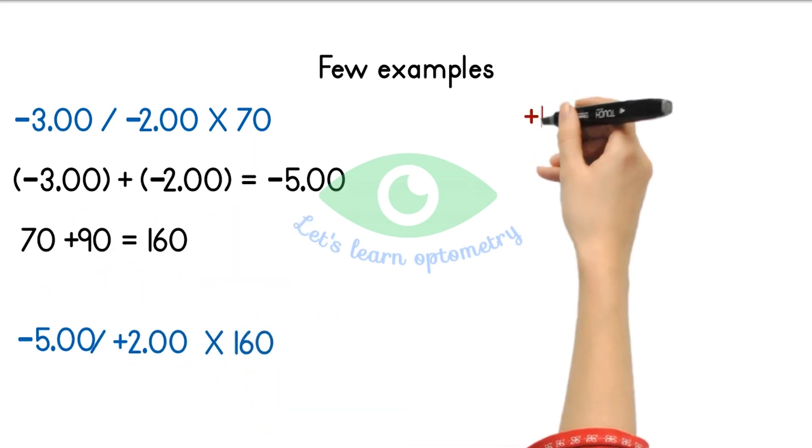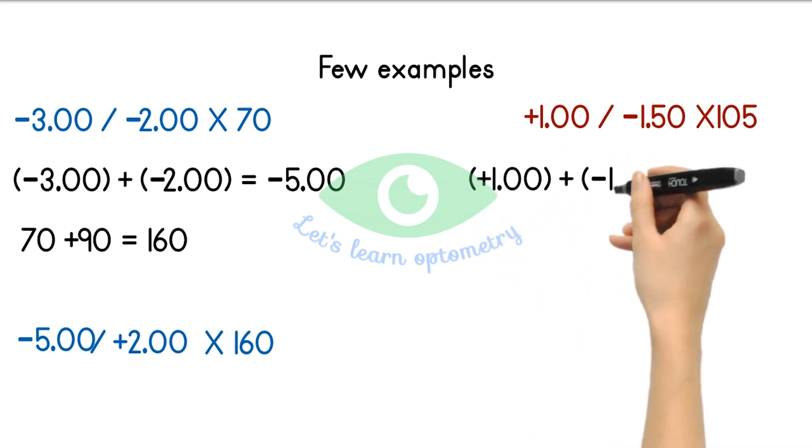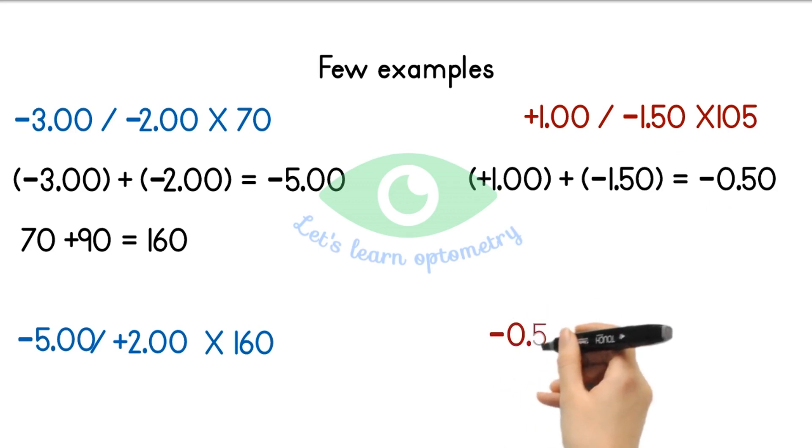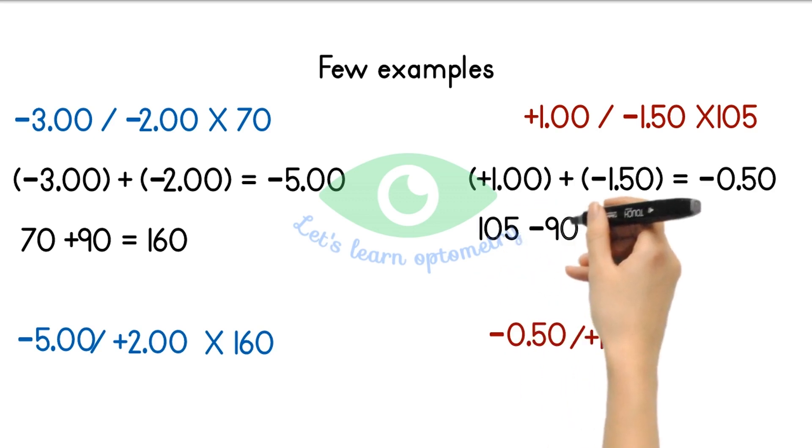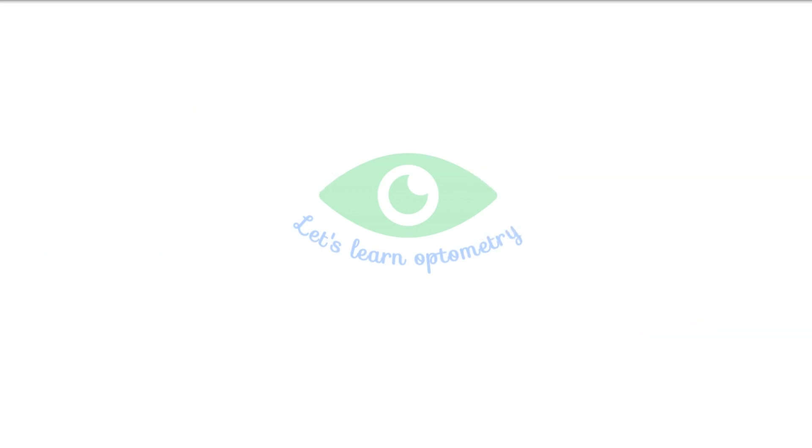So the next example: plus 1 spherical minus 1.5 cylinder at 105 degree axis. So if I algebraically add plus 1 and minus 1.5 I get minus 0.5. So my spherical power is minus 0.5. Now I am changing the sign of the cylinder as plus 1.5. The given axis is more than 90. So I subtract 90 from it and I get 15 degree axis.